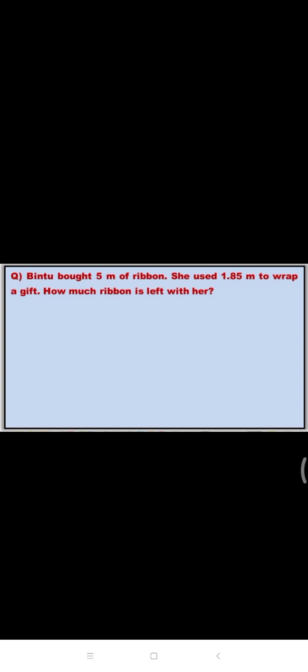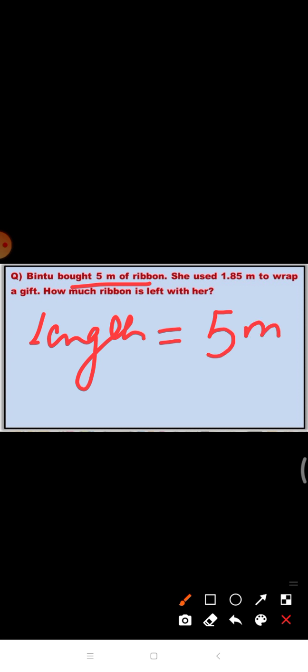So here, in the first sentence, what is given? We are given with the length of the ribbon. So, length of the ribbon is equal to 5 meter. Now, in the second sentence, she used 1.85 meter to wrap a gift. So here, the length of the ribbon which is used is equal to 1.85 meters. How much ribbon is left with her? So what we have to do? We have to do subtraction.